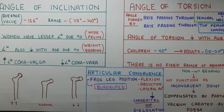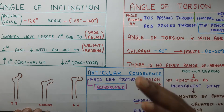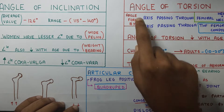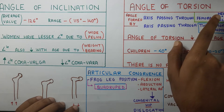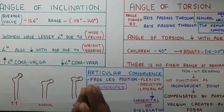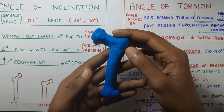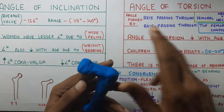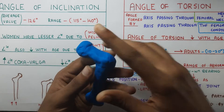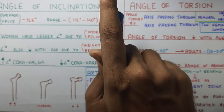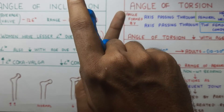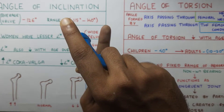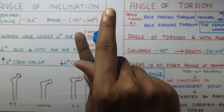Now going to the angle of torsion. The definition is very important. The angle is formed by the axis passing through the femoral head and neck, and the axis passing through the femoral condyles. So the first axis passes through the femoral head and neck, and the second axis passes through the femoral condyles. The angle formed by these two lines is the angle of torsion. If it's anteriorly directed, it is called anteversion; if it's posteriorly directed, it's called retroversion.